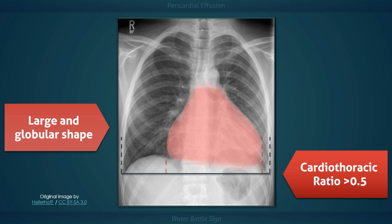On a posterior-anterior radiograph such as this one, the cardiothoracic ratio should be less than 0.5. This value is not measured on an anterior-posterior radiograph because over-magnification of the heart would give an inaccurate estimation of its size. Inspection of the airway reveals that the lower trachea is not quite vertical and that the carina appears to be displaced to the right.